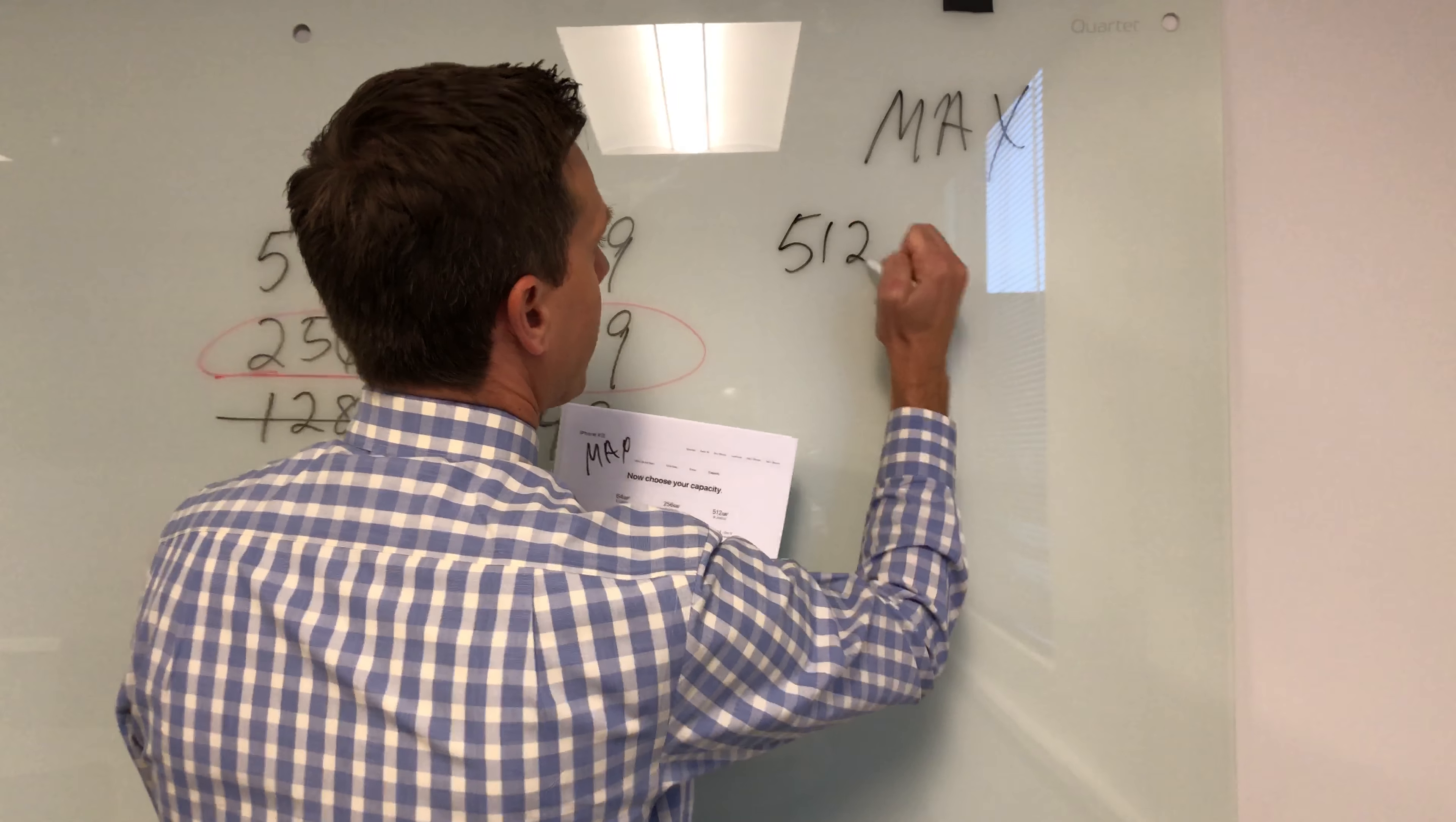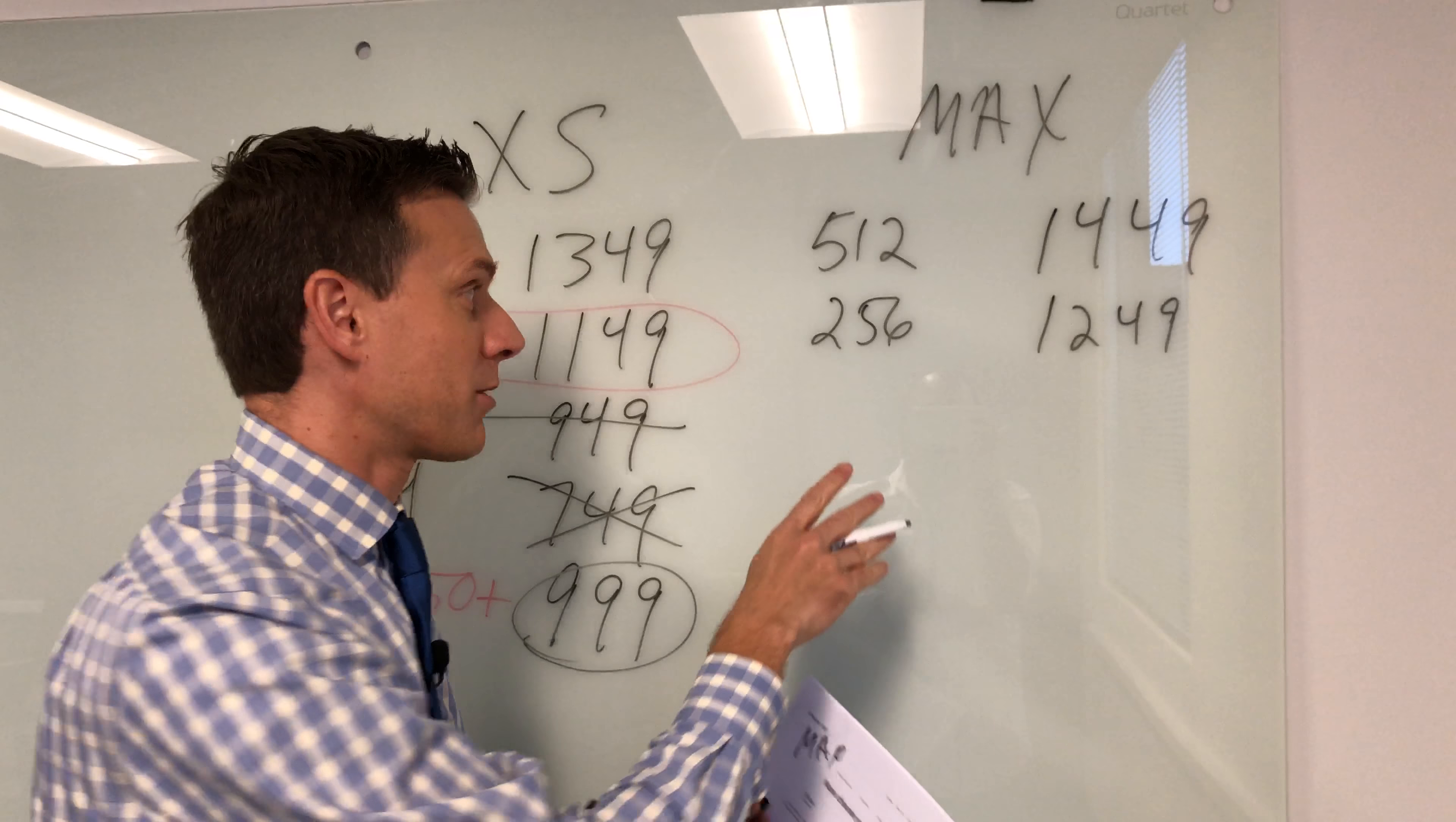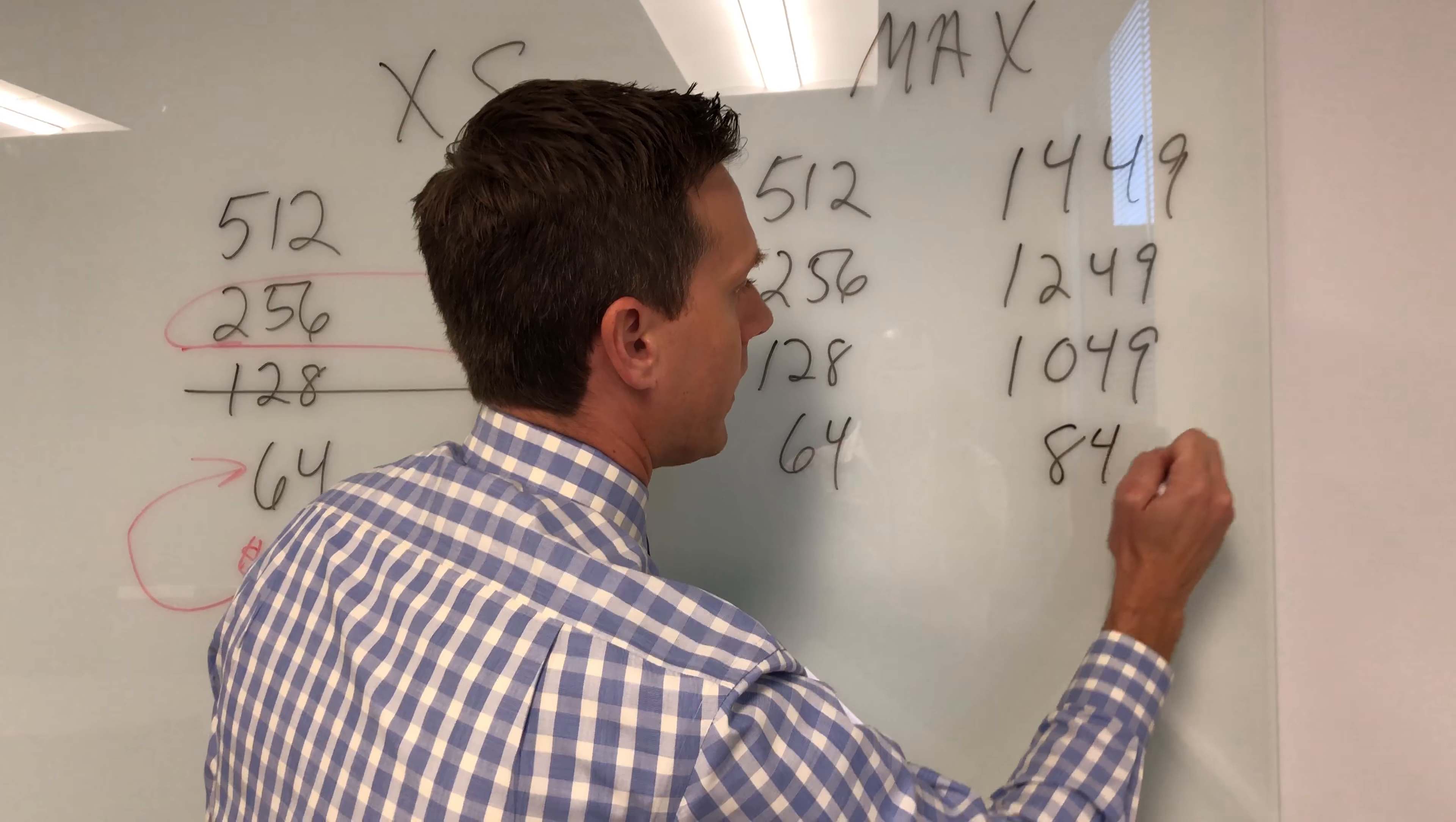512 gigs is $1,449. Then you get 256 gigs, and that is $1,249. Oh, do we see the pattern that's already emerging? So what would the next number be? 128, which is half the memory, and this would be $1,049, right? And then we go down to 64, which is half the memory, and we go down to $849.